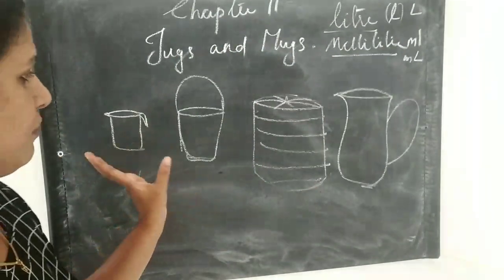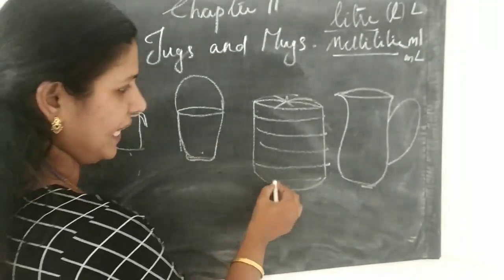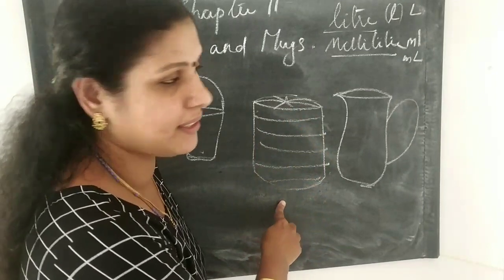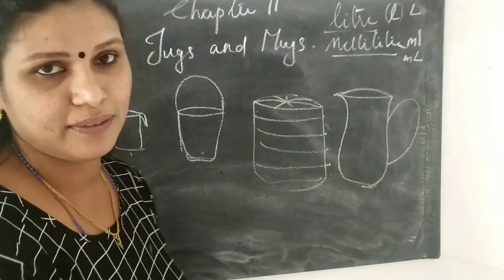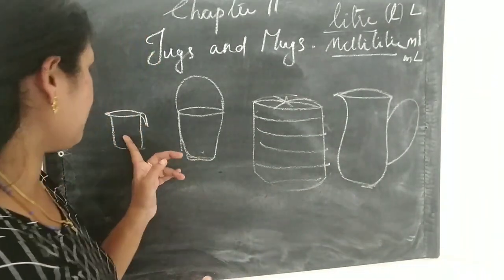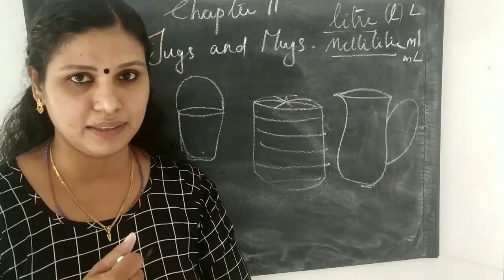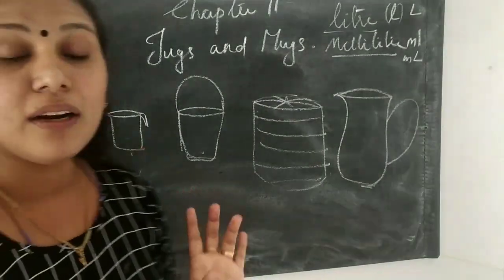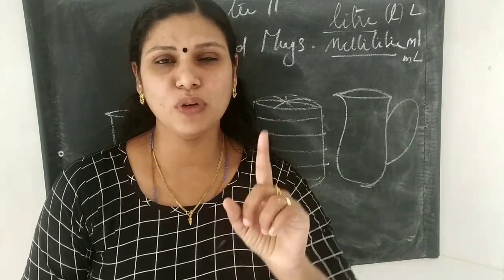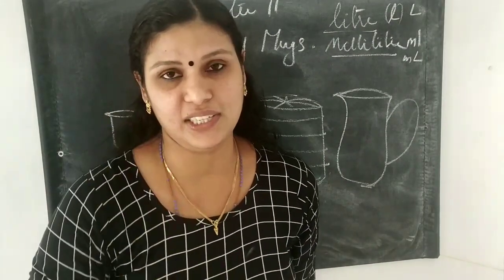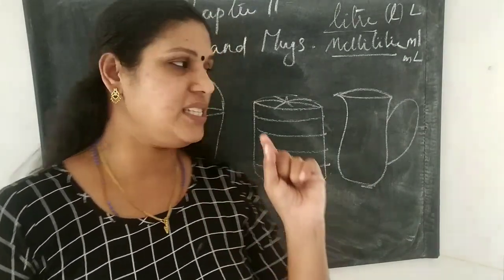Let me draw some figures. This is a cup, a mug. This is a bucket, a motor tank, and a jar. Each has a different capacity. A water bottle holds about one litre of water.